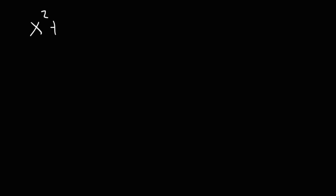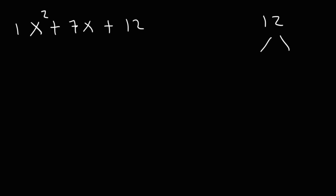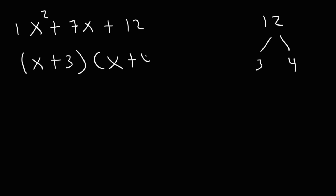Now we need to talk about factoring trinomials — when we have three terms — with a leading coefficient of 1. Find two numbers that multiply to 12 but add to 7. Those numbers are 3 and 4: 3 plus 4 is 7, and 3 times 4 is 12. So the answer is x plus 3 times x plus 4.